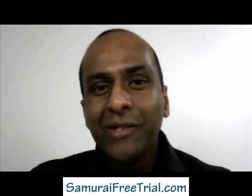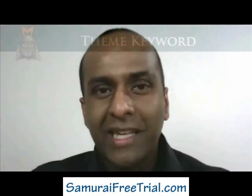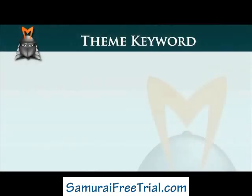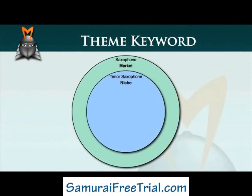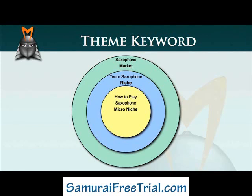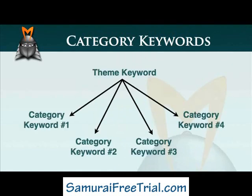In our last video, we looked at the process of drilling down into a market in order to find a theme keyword. The example we used was looking into the saxophone market and drilling down to find the tenor saxophone niche, and then drilling down even further to find the how to play saxophone micro niche. In this video, we're going to look at the next step of the process, which is to use our theme keyword to find a series of category keywords.